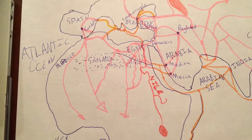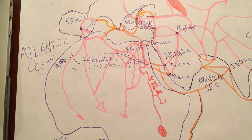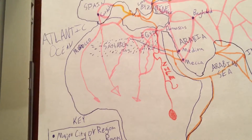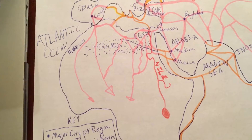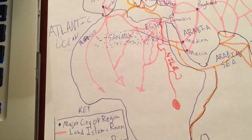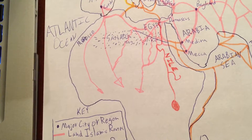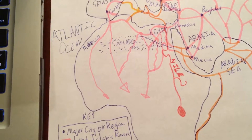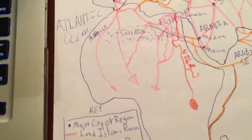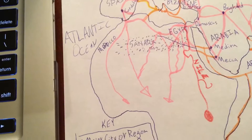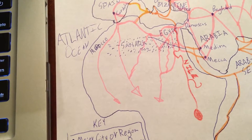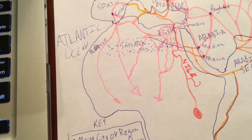Islam had just started and was already spreading all the way from Spain into northern India. Along with all these ideas, trade spread and many wonderful goods were traded. Merchants and craftspeople worked together in the caravan trade. A caravan is a group of traders that traveled together. They did this for safety so they wouldn't get robbed.